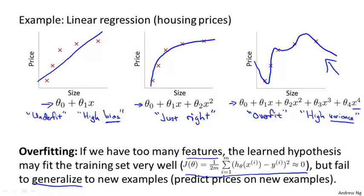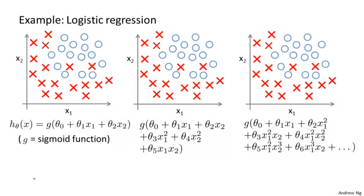On this slide we looked at overfitting for the case of linear regression. A similar thing can apply to logistic regression as well. Here's a logistic regression example with two features x1 and x2. One thing we could do is fit logistic regression with just a simple hypothesis like this, where as usual g is my sigmoid function, and if you do that you end up with the hypothesis trying to use maybe just a straight line to separate the positive and negative examples, and this doesn't look like a very good fit to the hypothesis. And so once again, this is an example of underfitting or of a hypothesis having high bias.